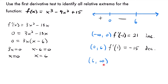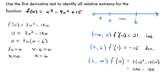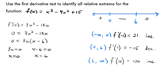Finally, let's test a value for our last interval from 6 to infinity. I'm going to pick 10. So we have 3 times 10 squared minus 18 times 10. That's 3 times 100, which is 300, minus 180, which equals positive 120. That is a positive slope, so the function is increasing on that interval. We label that as positive on our number line.